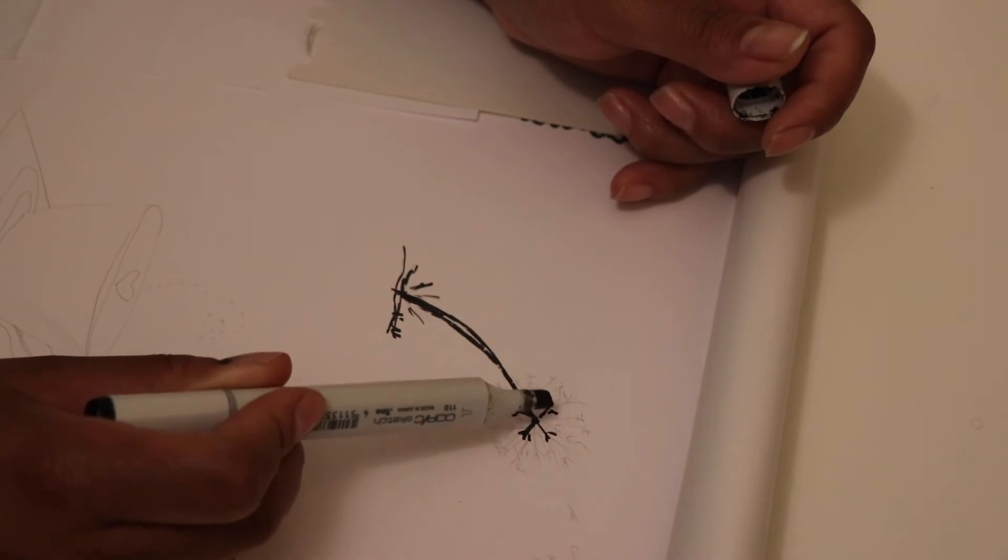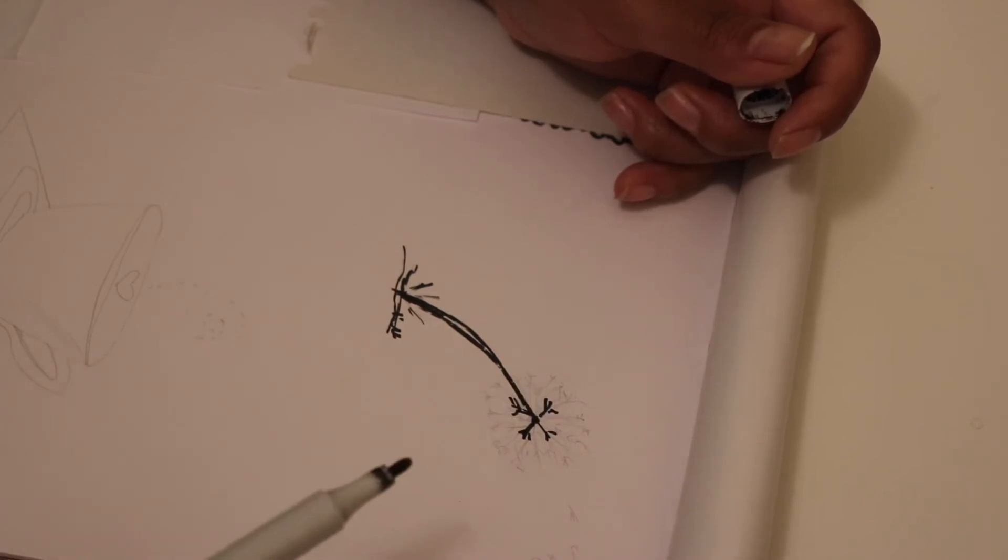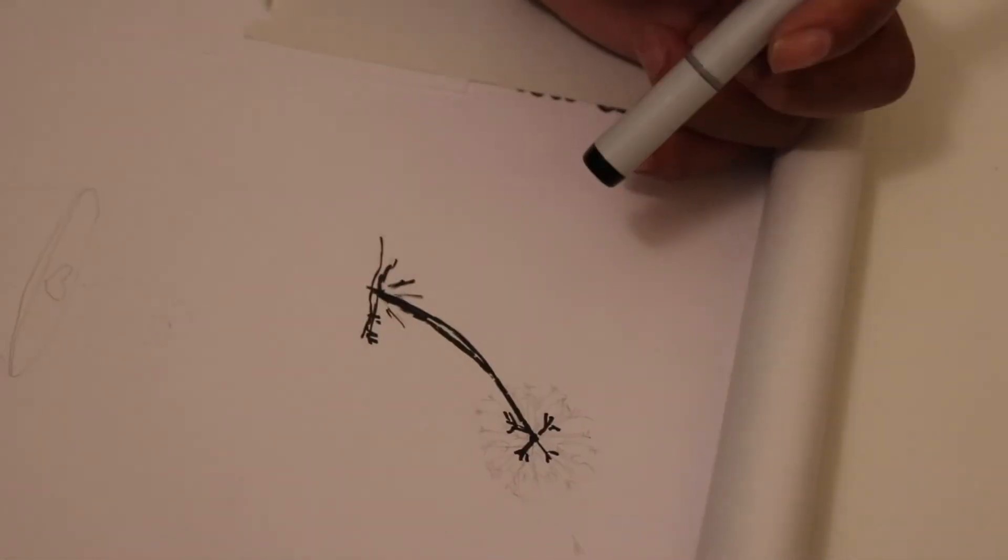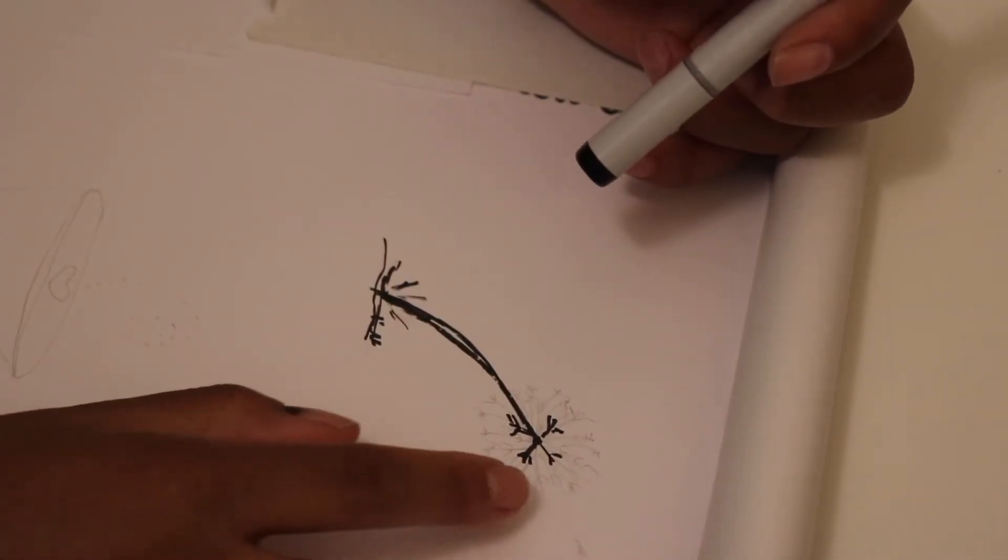Extending from the first one. You got something like that. I don't know if you can see it. It's three little lines.